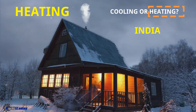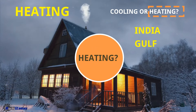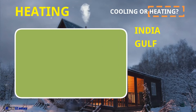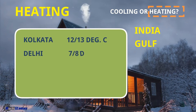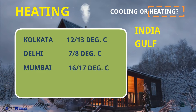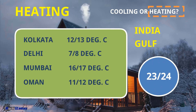Now what about India or Gulf countries where the summer temperature is high - is heating required there? If you study the winter conditions in different regions: in Kolkata, winter temperature goes to 12-13 degrees centigrade; in Delhi, 7-8 degrees; Mumbai 16-17 degrees; and in a Gulf country like Oman, winter temperature goes to 11-12 degrees centigrade. To maintain a comfortable temperature of 23-24 degrees, there should definitely be some heating system. Normally heating is maintained by electric heaters, and in places like Delhi many people use room heaters as well.